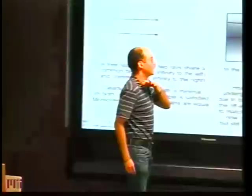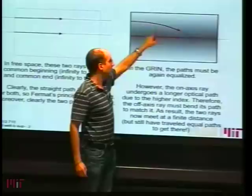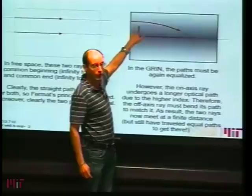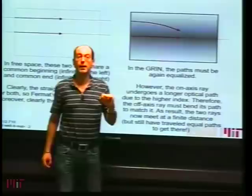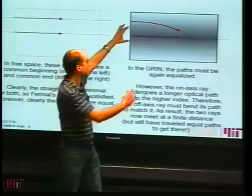Fermat is satisfied in free space: the rays propagate through the minimum path, and they're all equal in terms of optical path. Now, introducing the GRIN medium: the off-axis ray travels a longer geometrical distance through a lower index, while the on-axis ray goes through a higher index medium. The product balances so that by the time the rays meet again, they still have equal optical paths. The path to the left is equal for both; integrating the optical path along each trajectory gives equal answers.